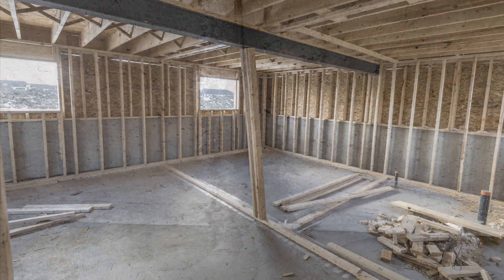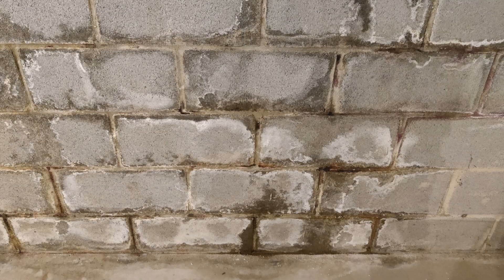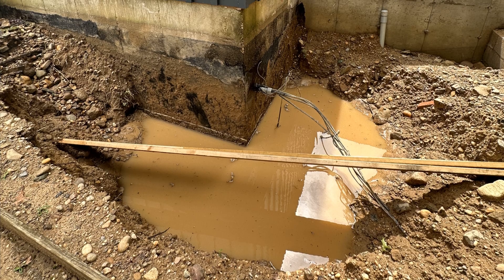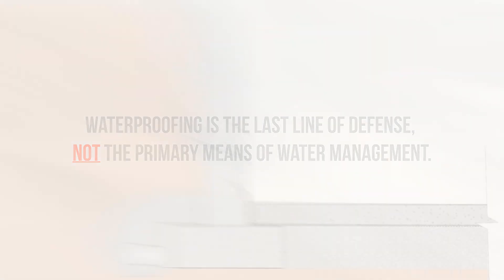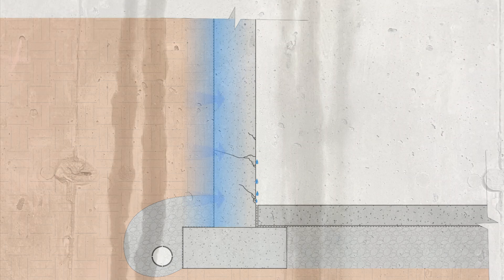The next location where we see tons of moisture issues also should be no surprise to anyone, and that's in basement walls, both in new and existing buildings. Water intrusion is such a common problem with basements, and it stems from a misunderstanding of waterproofing and drainage. The buildup of water around the foundation exerts what we call hydrostatic pressure against the foundation walls, which is the weight of water pressing against the building and forcing its way inside through any small cracks, gaps, or penetrations.